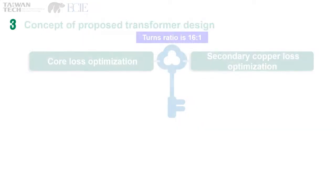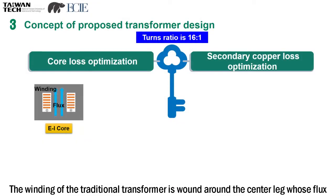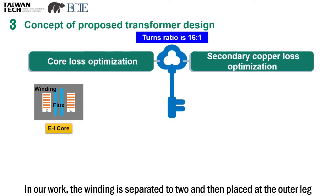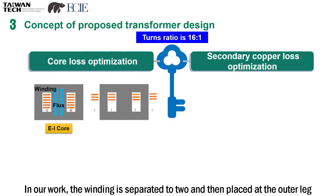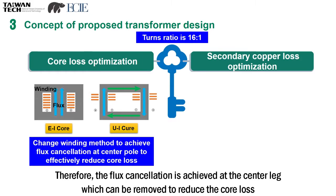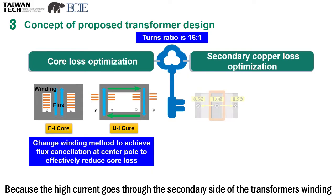The winding of the traditional transformer is wound around the center leg, whose flux is the sum of the outer legs' flux. In our work, the winding is separated into two and placed at the outer legs. Therefore, flux cancellation is achieved at the center leg, which can be removed to reduce the core loss.